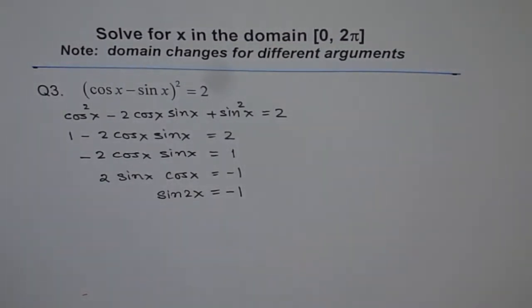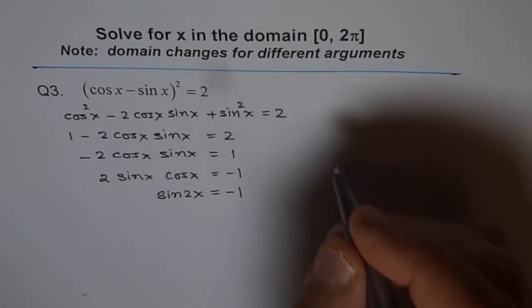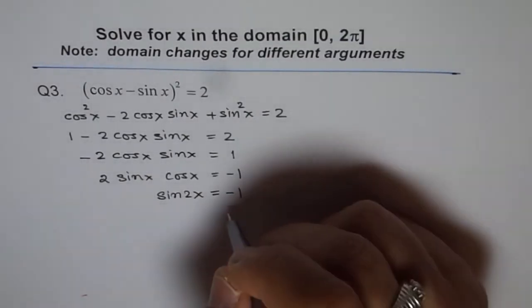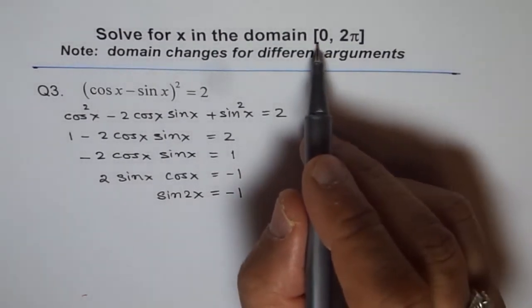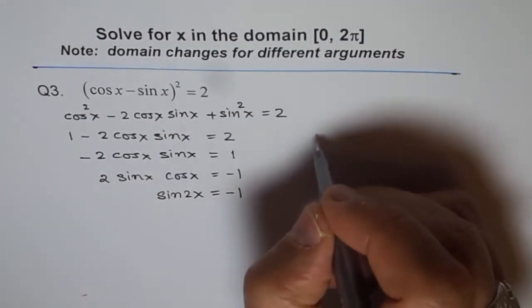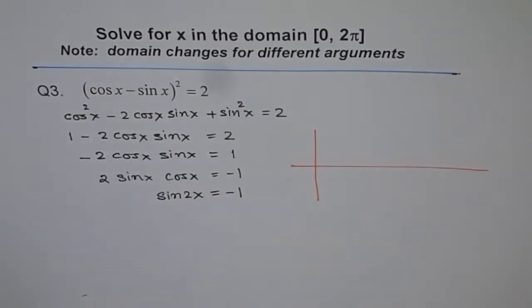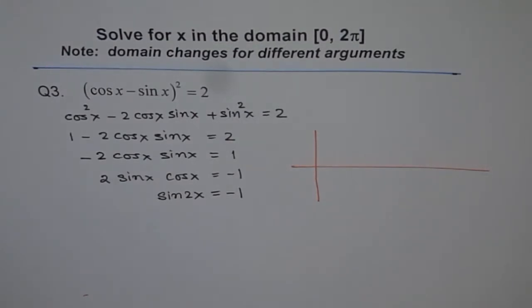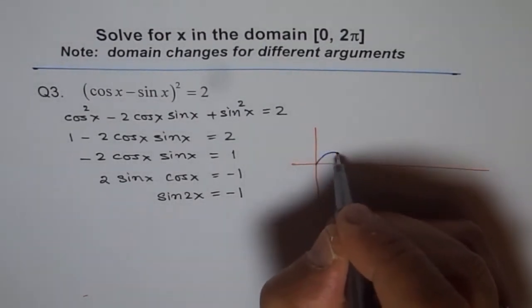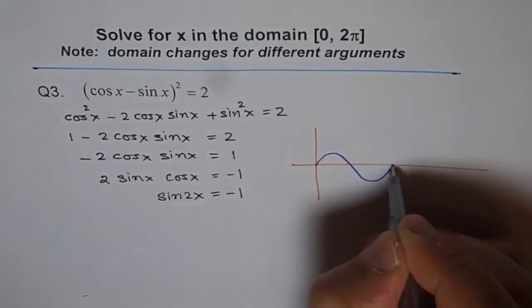The value of theta which will give you -1 for sin is 3π/2. That is one answer. But we are interested in the domain 0 to 2π. Let's first sketch our sin function and see what we are really getting into.